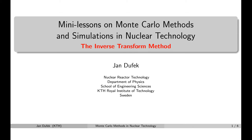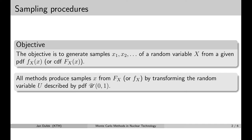Welcome back. In this mini lesson we will learn about the so-called inverse transform method. The inverse transform method is one of the sampling procedures that are used for transforming numbers from random number generators into other random numbers that have a specific probability density function.